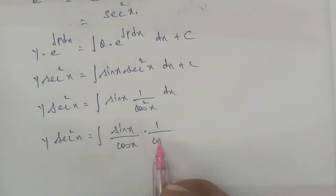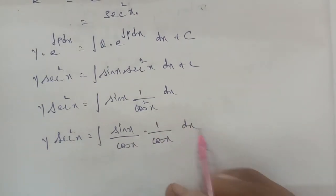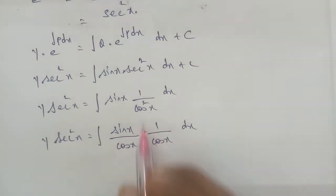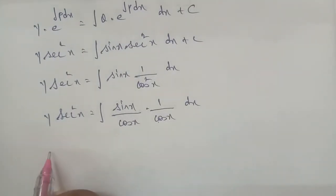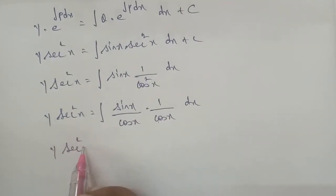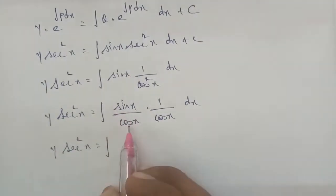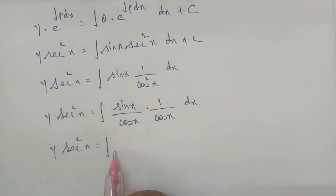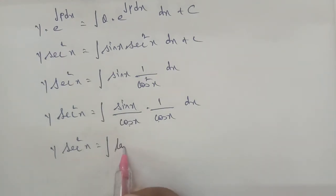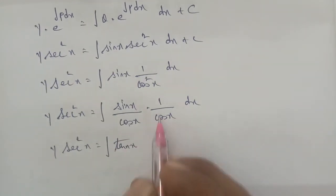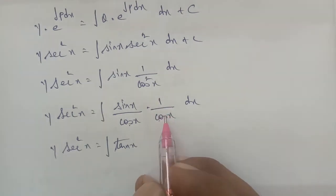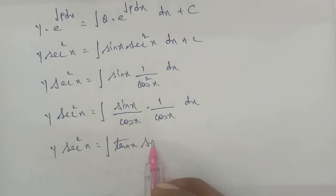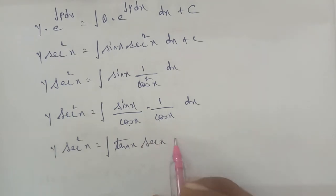So we have integral of sin x · sec²x dx. This simplifies as sin x by cos x into 1 by cos x dx. Now sin x by cos x is tan x, and 1 by cos x is sec x, so the integrand becomes tan x · sec x dx.